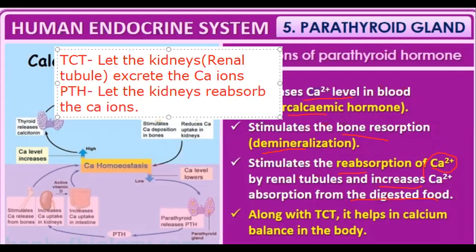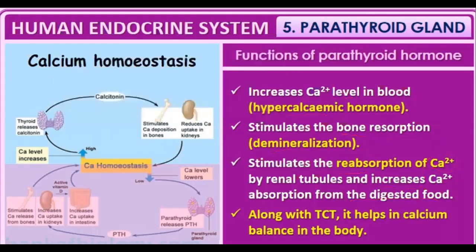So these two hormones act opposite to each other. TCT (thyrocalcitonin) and PTH (parathyroid hormone) work together to maintain and regulate calcium levels in our blood.